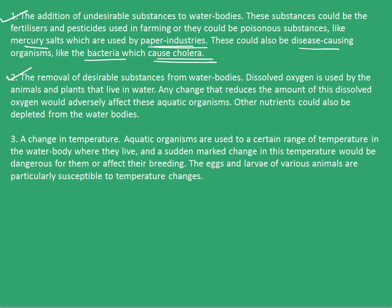The second type is the removal of desirable substances from water bodies. We all know how important oxygen is for our survival; it is also equally important for marine species. Any change that reduces the amount of dissolved oxygen would adversely affect these aquatic organisms. Other nutrients could also be depleted from the water bodies, causing water pollution.